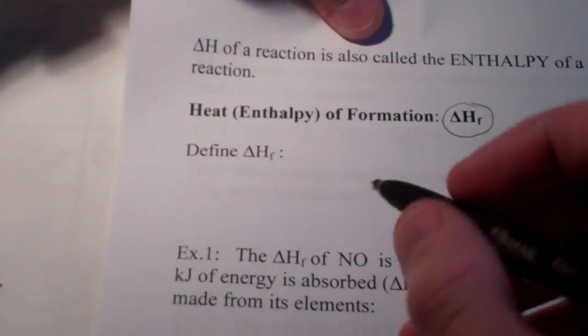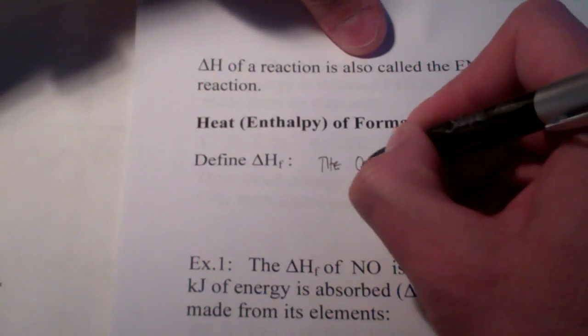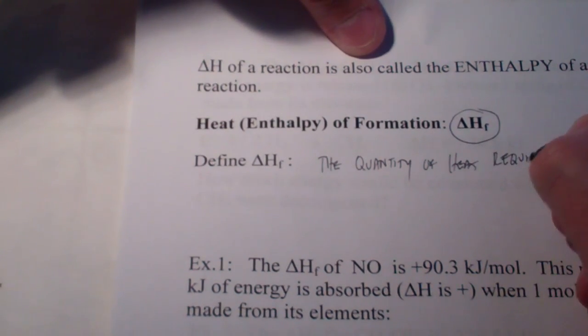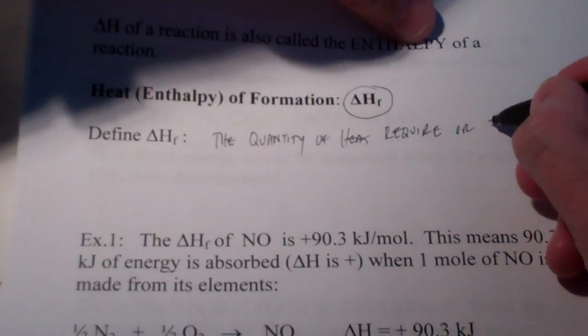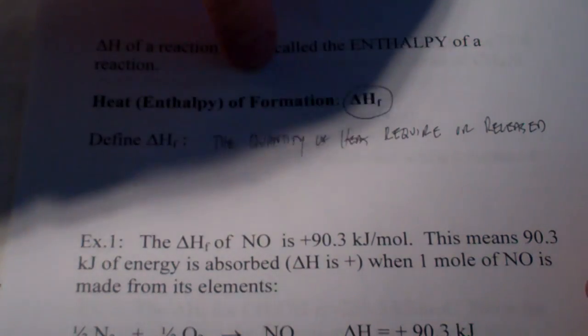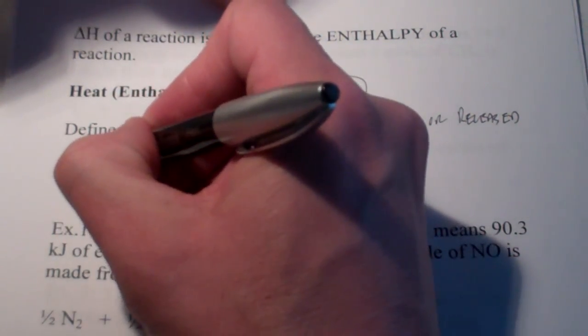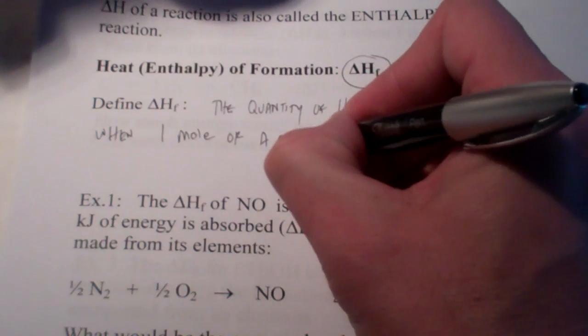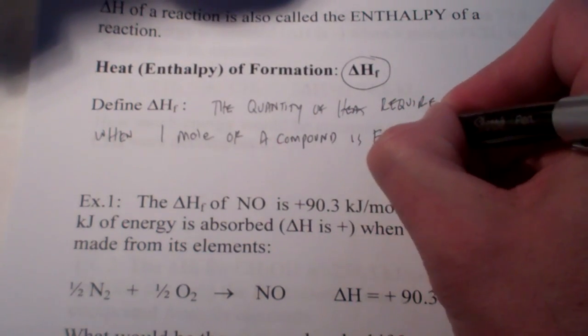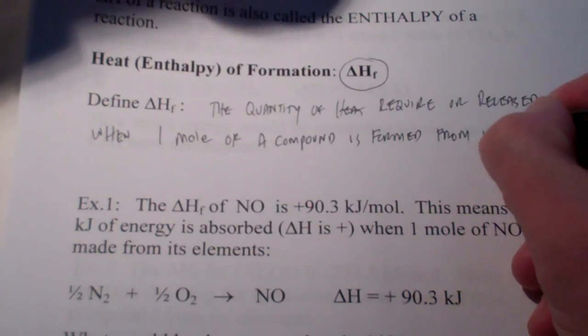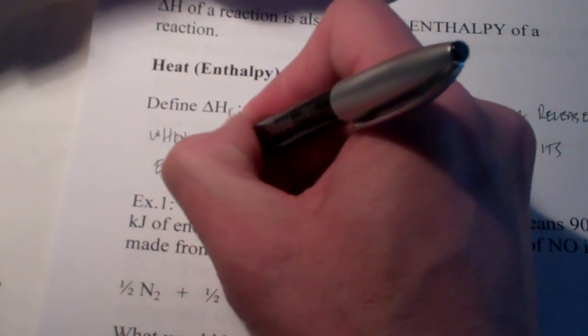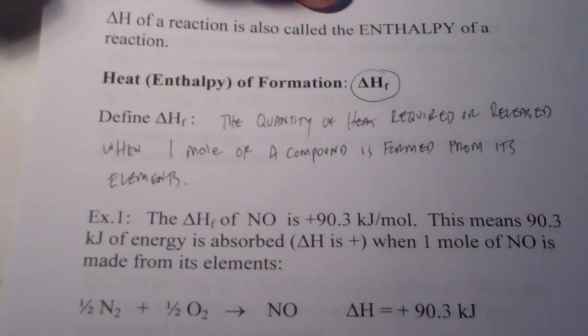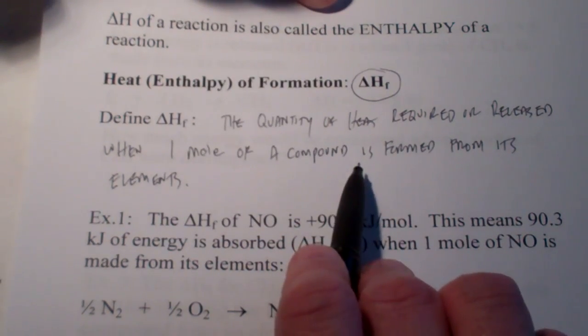The definition of enthalpy of formation is the quantity of heat required or released when one mole of a compound is formed from its elements. And, that would be in their elemental state. So, the quantity of heat required or released when one mole of a compound is formed from its elements.